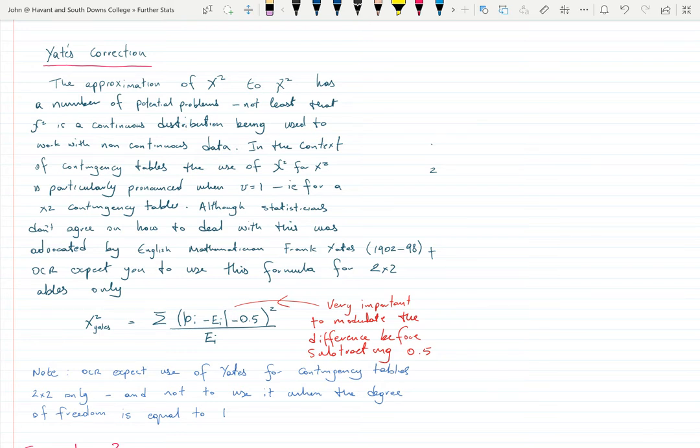This can have problems when you have a two by two table. We've got what's called a continuity correction to correct for it. Many statisticians still advocate this thing called Yates correction. Basically the absolute value of the top bit, the residual, is reduced by 0.5 for each of the cells.